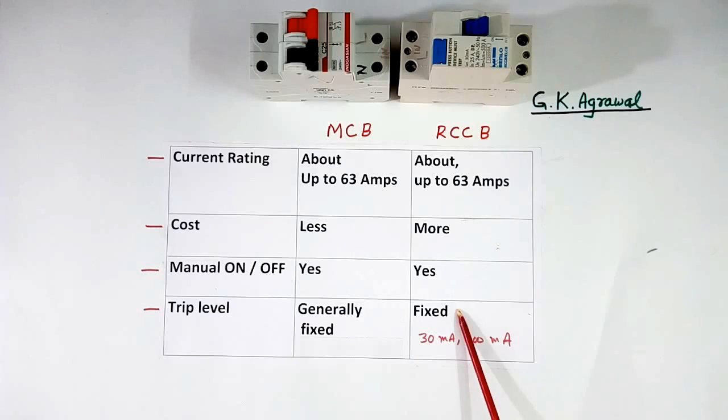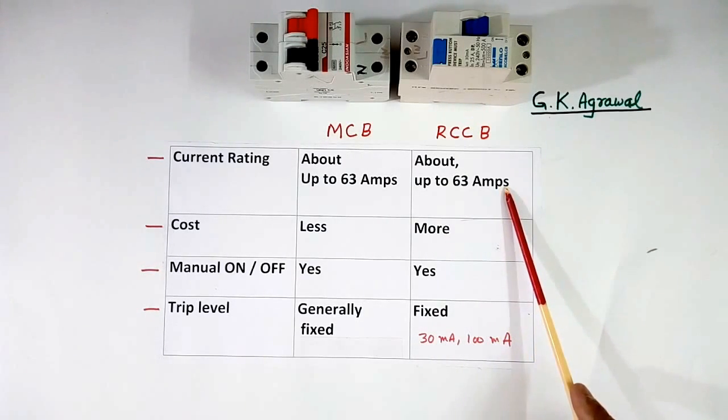Trip level: fixed, fixed. But difference is, here it is defined in mA. Say 30 mA or 100 mA. Even if current is flowing 63 A.